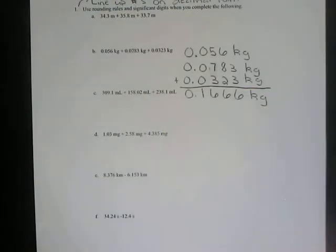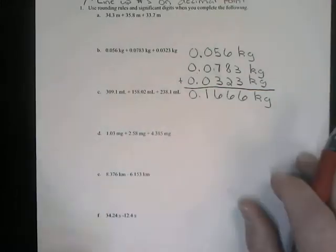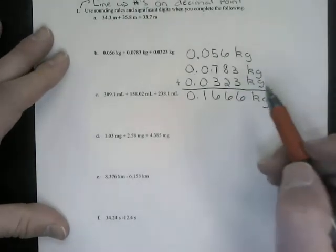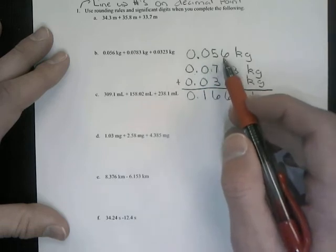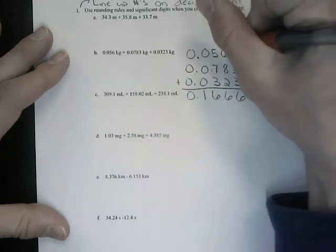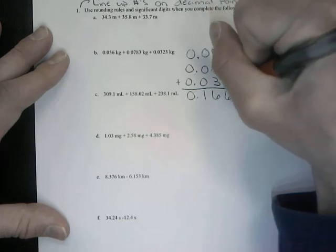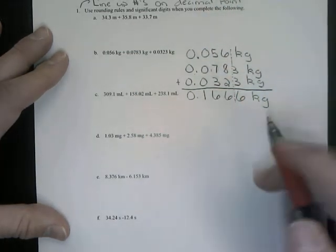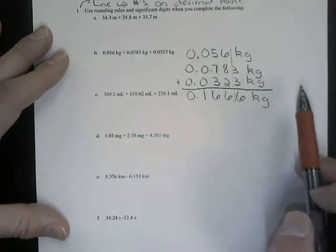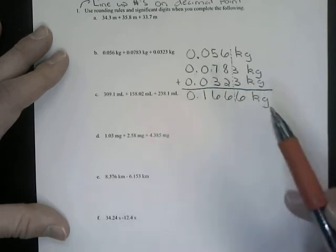Now, our rounding rules said for addition and subtraction that we can only have as many digits as the number with the fewest decimals. So an easy way to see that, if we line it up and down, we look at the number that has the fewest decimals, which is 0.056. After that number there, we draw a dotted line, and this dotted red line that I am putting on the paper is saying anything to the right is not included in our significant digit, but it does help with rounding.